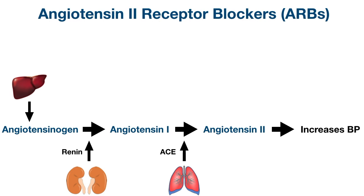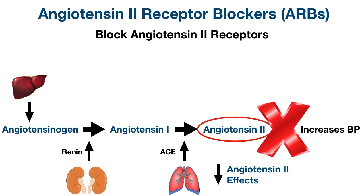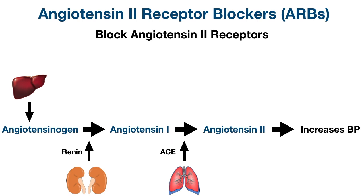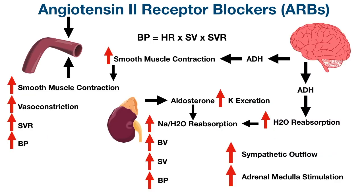Now let's look at how angiotensin 2 receptor blockers work by blocking the normal physiology of the renin-angiotensin-aldosterone system. As the name suggests, ARBs block angiotensin 2 receptors. Since angiotensin 2 plays an important role in increasing blood pressure, blocking its receptors will decrease its effects and decrease blood pressure. We can also see how ACE inhibitors work: by blocking ACE, you decrease the production of angiotensin 2, which also decreases blood pressure.